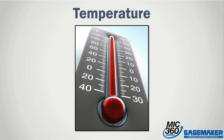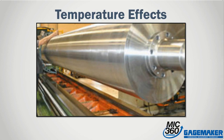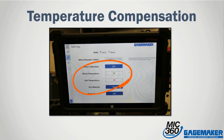Temperature is always a concern when measuring large parts, regardless of the style gauge being used. As the part gets larger and as the temperature gets higher or lower, the part will change in size. A second concern is when there is a temperature difference between the gauge and the part. For example, an OD mic that has been isothermal at 68 degrees in the lab is brought out into the shop to measure a warm part at ambient temperature. This delta in temperature between the part and the gauge produces a measurable difference. On the MIC360, there is an option for applying a temperature compensation feature to negate this effect.